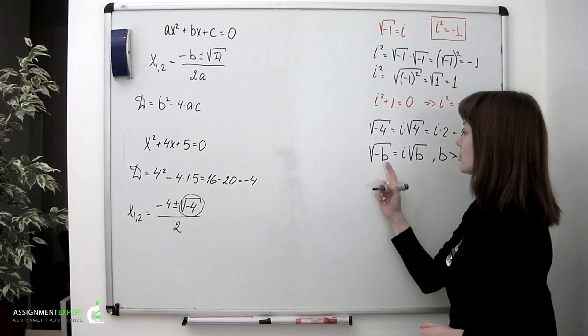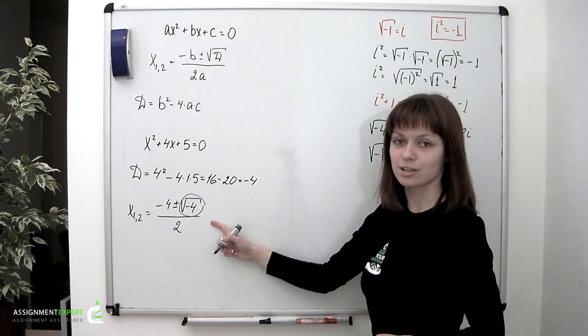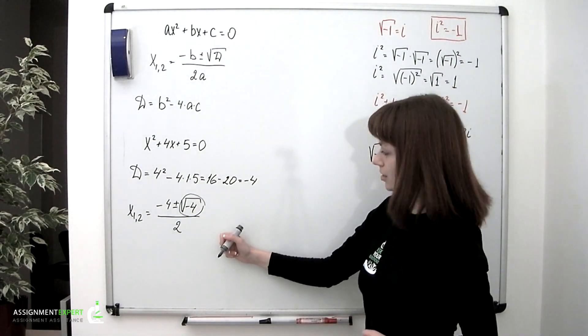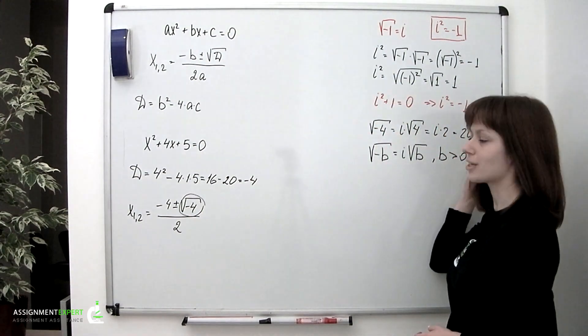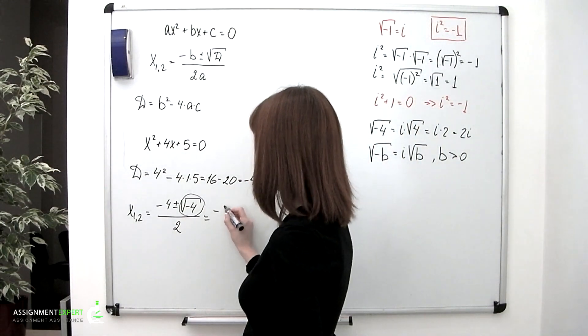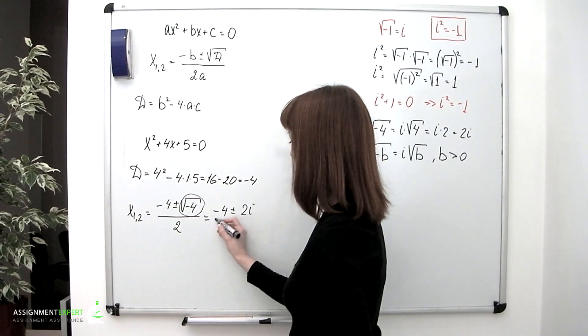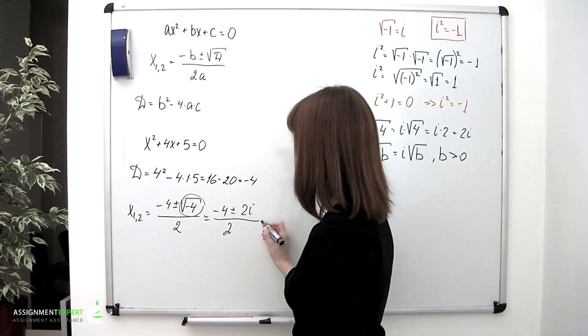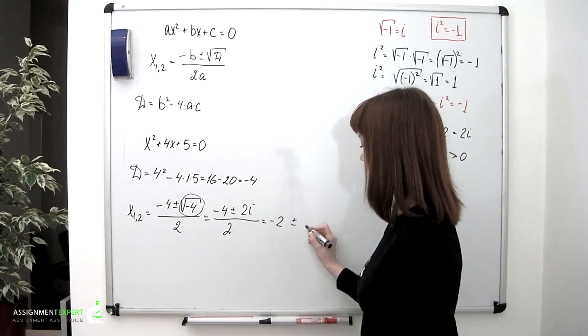Now, as we know how to deal with square roots of negative numbers, we can get back to our example and actually solve this equation. So we know that √-4 = 2i. We can substitute it into the expression and obtain (-4 ± 2i) / 2, which equals -2 ± i.